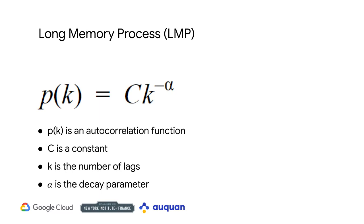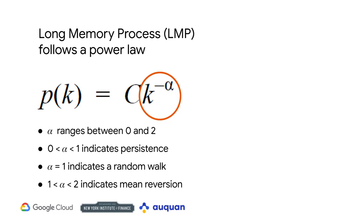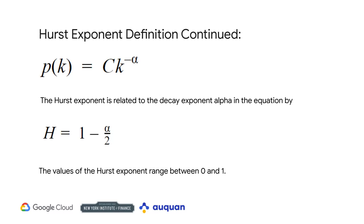In a long memory process, autocorrelation decays over time and the decay follows a power law. Power law decay time series are characterized by autocorrelation functions that decay at a rate of K raised to the minus alpha power, where K is the lag and alpha is the decay parameter. When alpha is between 0 and 1, the time series exhibits strong persistence, with values closer to 0 indicating even stronger persistence. When alpha is greater than 1, the time series exhibits high frequency or alternating behavior and is said to be anti-persistent. The Hurst exponent is equal to 1 minus alpha divided by 2. Since alpha is assumed to range between 0 and 2, the Hurst ranges between 0 and 1.